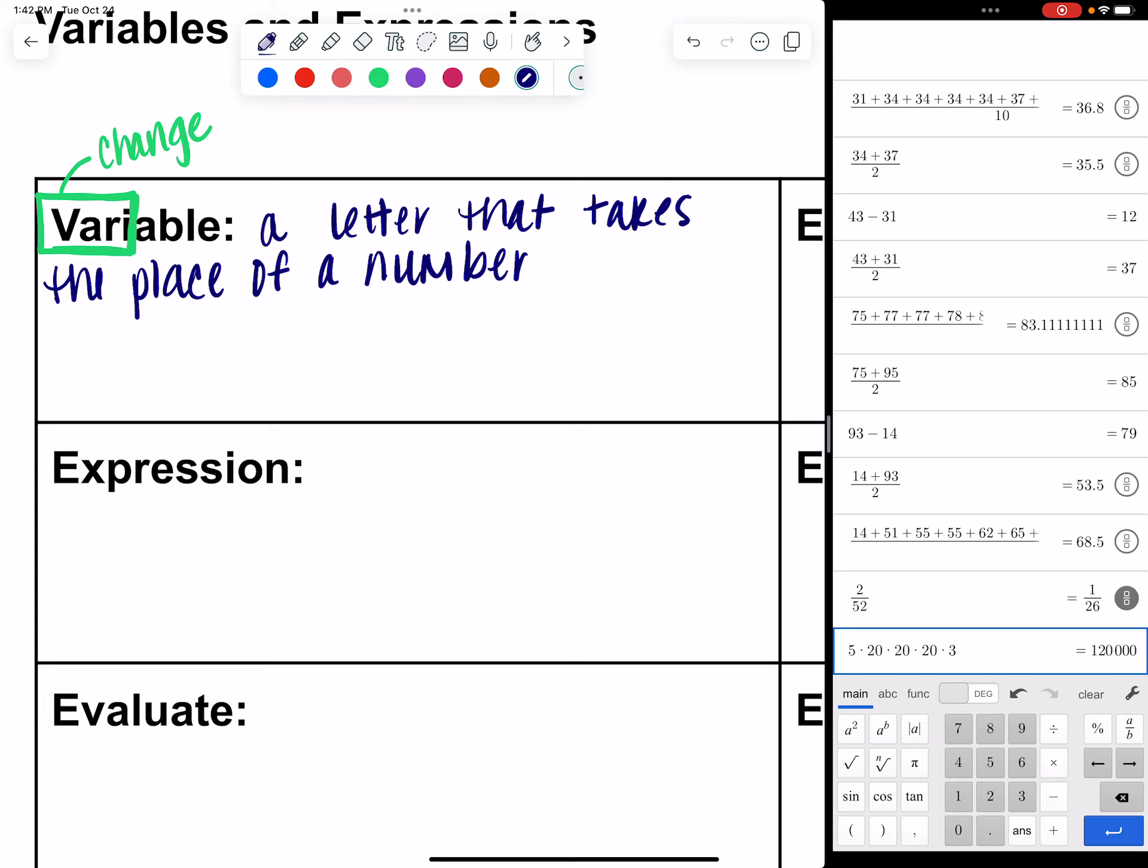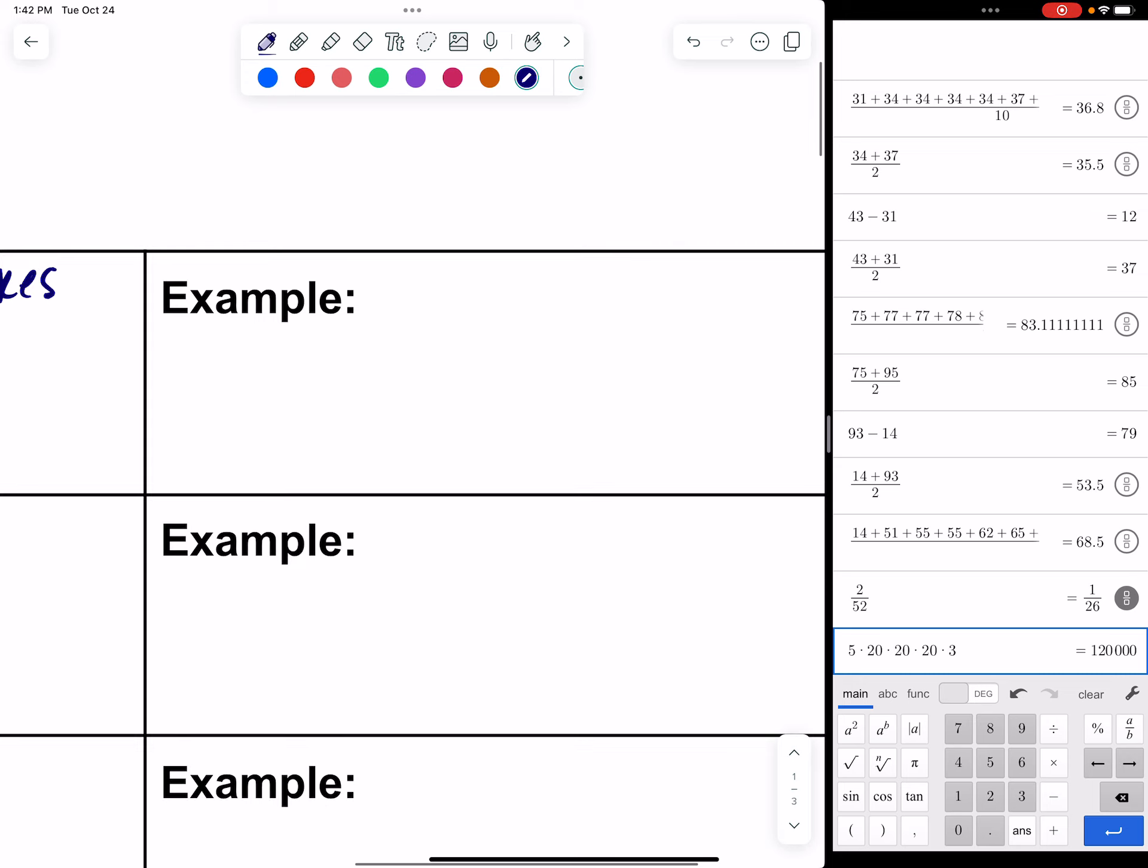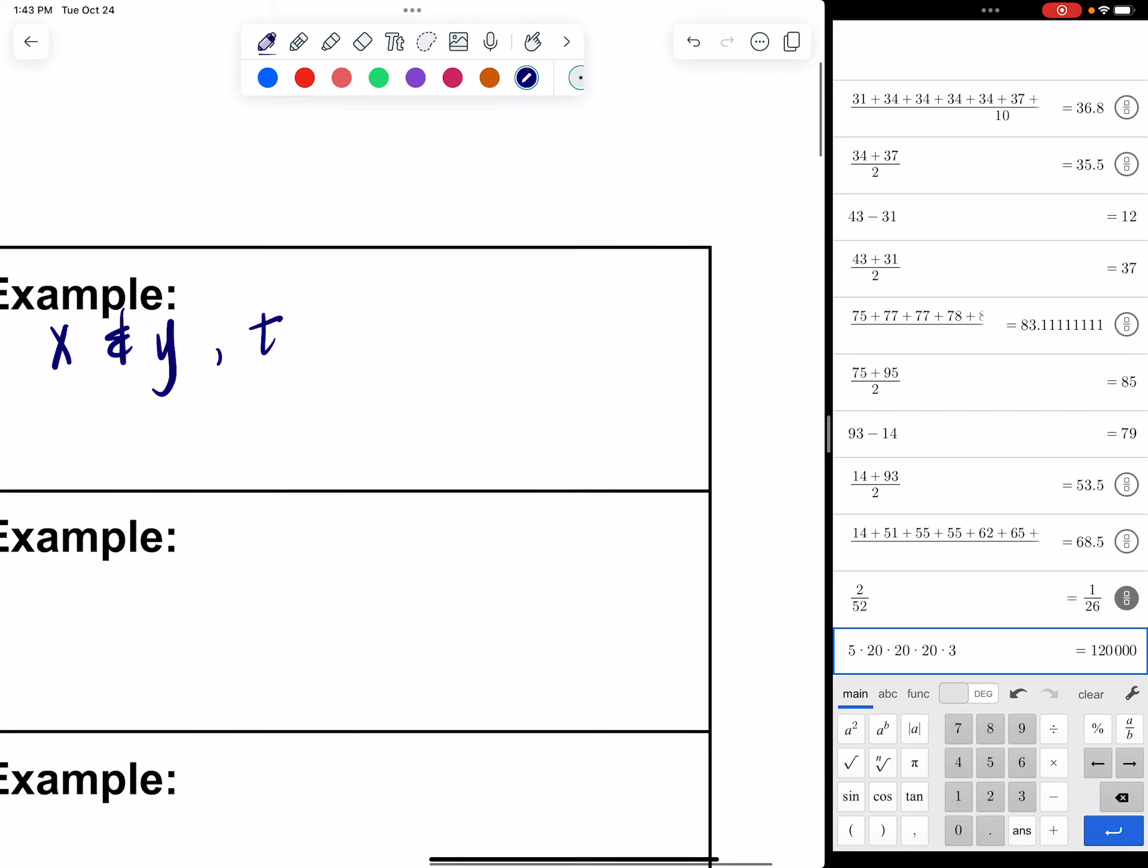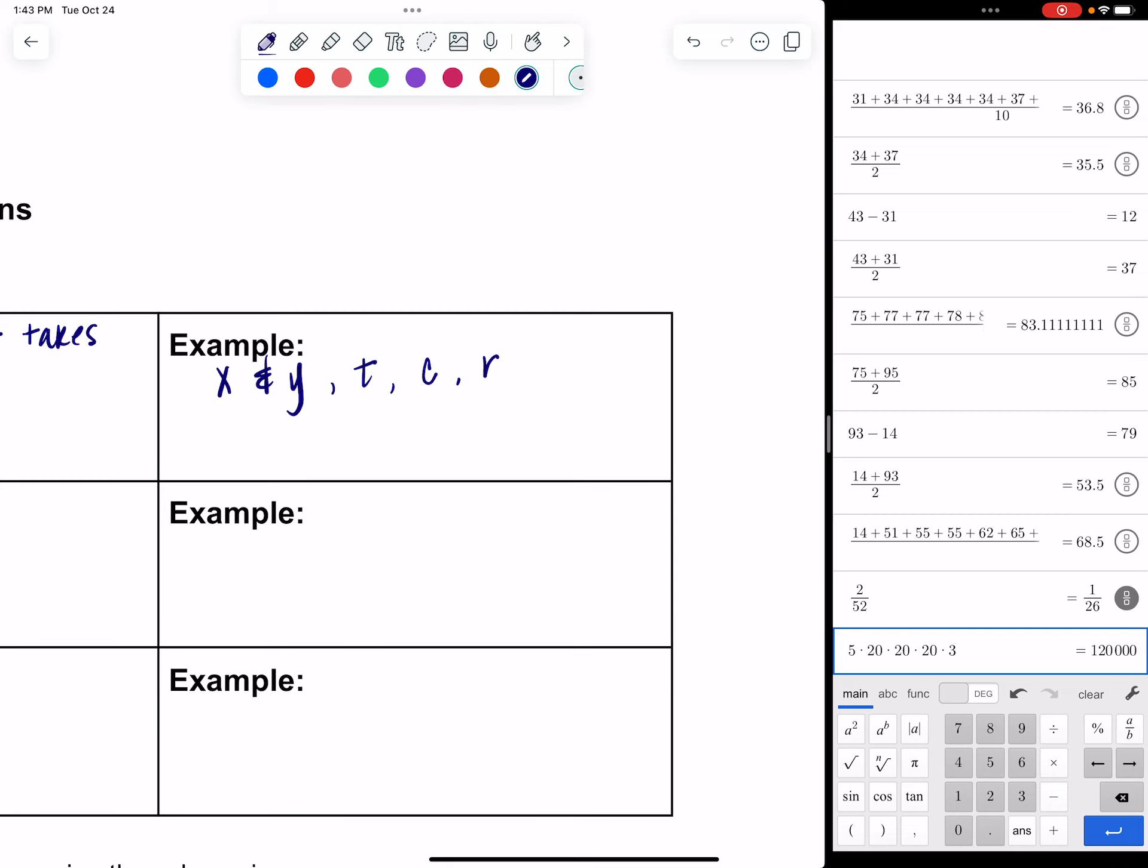You guys have been using these for a very long time. These could be X and Y. Those are the most common ones. When you get a little farther into math, we start using variables like T if we want to represent time. We might use C to represent cost. Maybe R for revenue. But you can use any variable you want to.